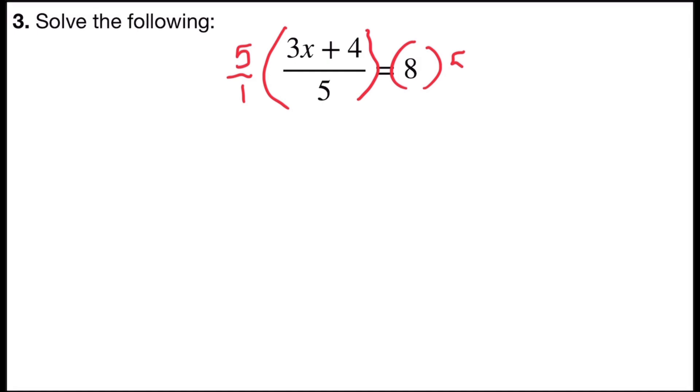If I'm going to multiply 5 on the left side, I also need to multiply by 5 on the right side in order to keep it balanced. And so 5 divided by 5 will be 1, and so I'll be left with 1 times the numerator, which is 3x plus 4. On the right side, 8 times 5 is 40.